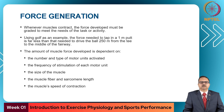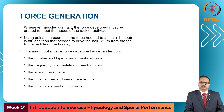Whenever a muscle contracts, the force developed must be graded to meet the needs of the task. For example, tapping a one-meter putt in golf requires less force than driving the same ball 250 meters from the tee. The amount of muscle force developed depends on the number and types of motor units activated, the frequency of stimulation, the size of the muscle, the muscle fiber and sarcomere length, and the speed of muscle contraction.